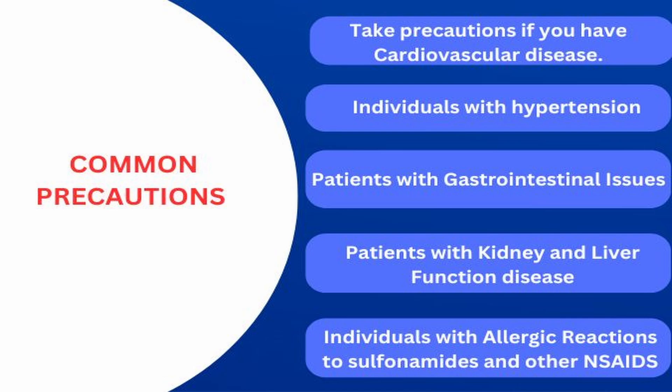I've listed some precautions to consider while taking etoricoxib. First, patients with a history of cardiovascular disease should use etoricoxib with caution due to the increased risk of heart attack and stroke. Second, regular monitoring of blood pressure is recommended, especially if you have hypertension. Third, while safer than non-selective NSAIDs, patients should still be cautious of gastrointestinal issues, especially those with a history of ulcers or bleeding. Fourth, regularly monitor kidney and liver function in patients with pre-existing conditions. Fifth, patients with allergic reactions to sulfonamides or other NSAIDs should avoid etoricoxib.